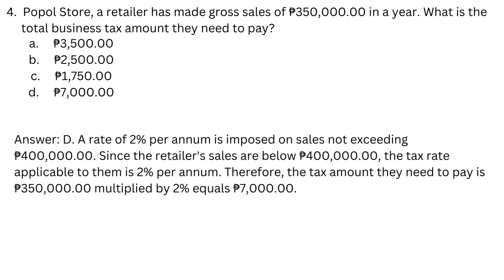Answer: d. A rate of 2% per annum is imposed on sales not exceeding $400,000. Since the retailer's sales are below $400,000, the applicable tax rate is 2% per annum. Therefore, the tax amount they need to pay is $350,000 × 2% = $7,000.